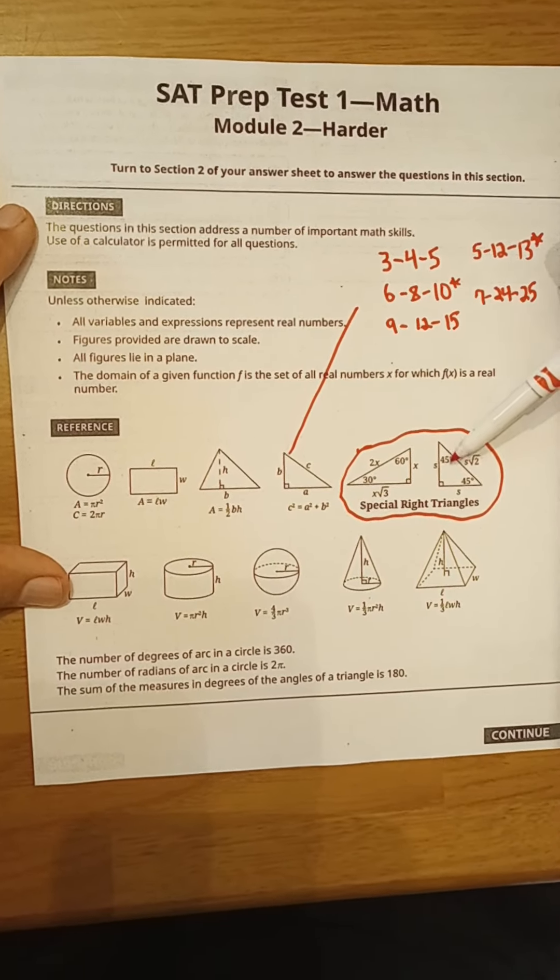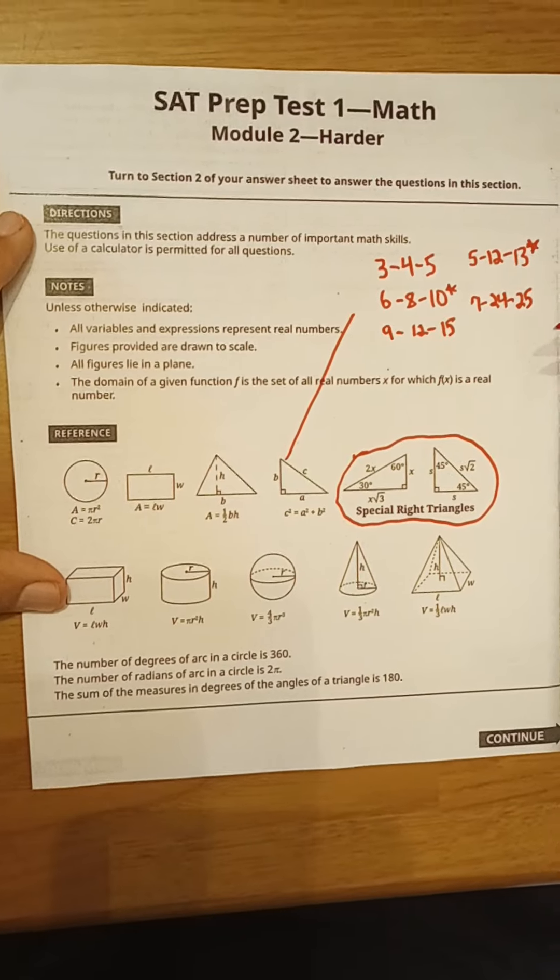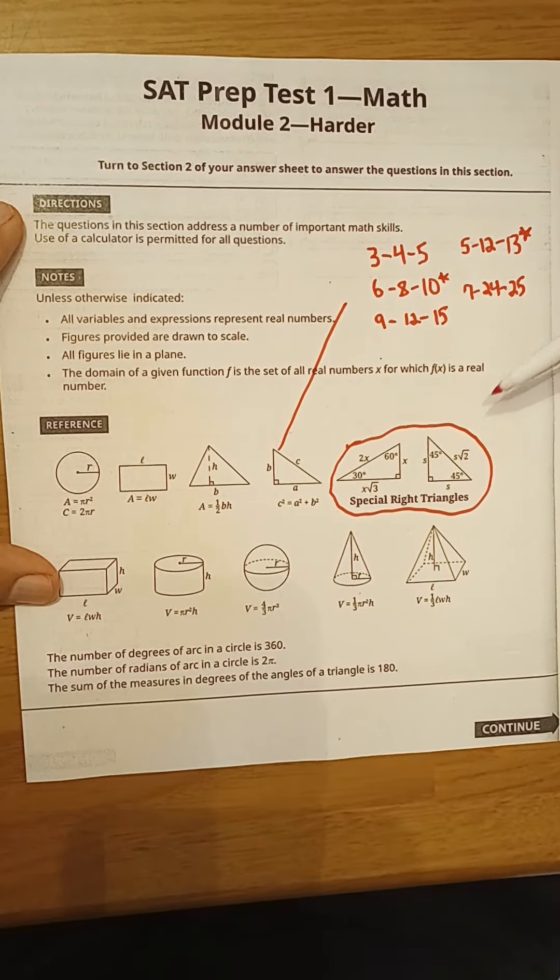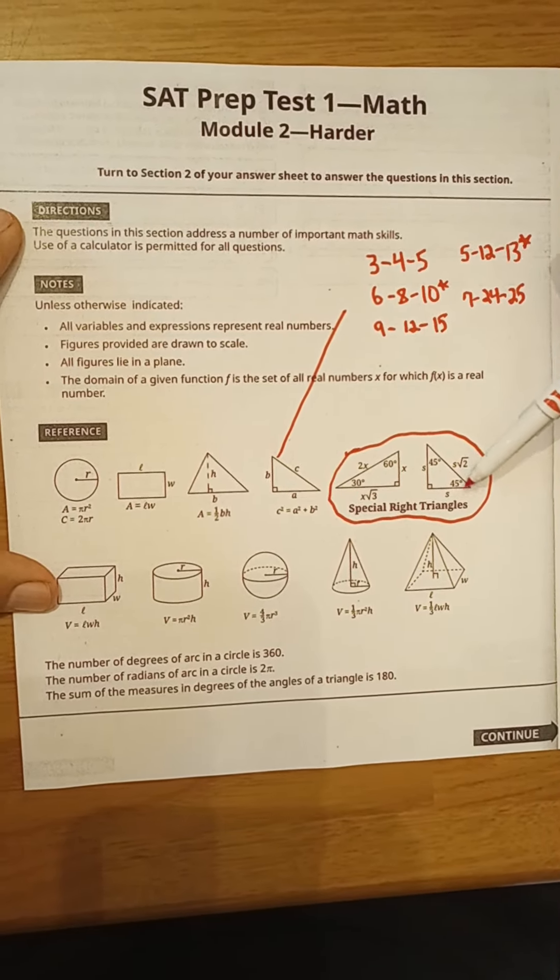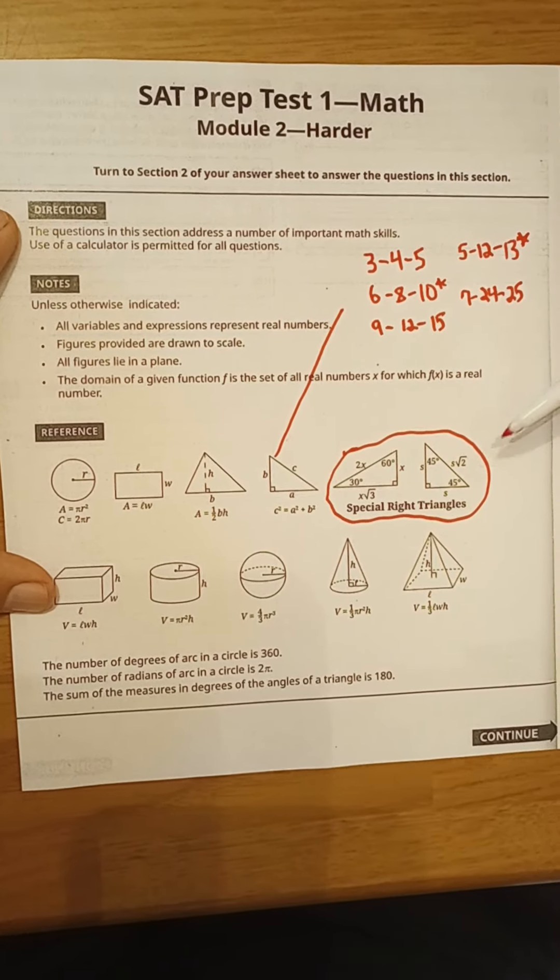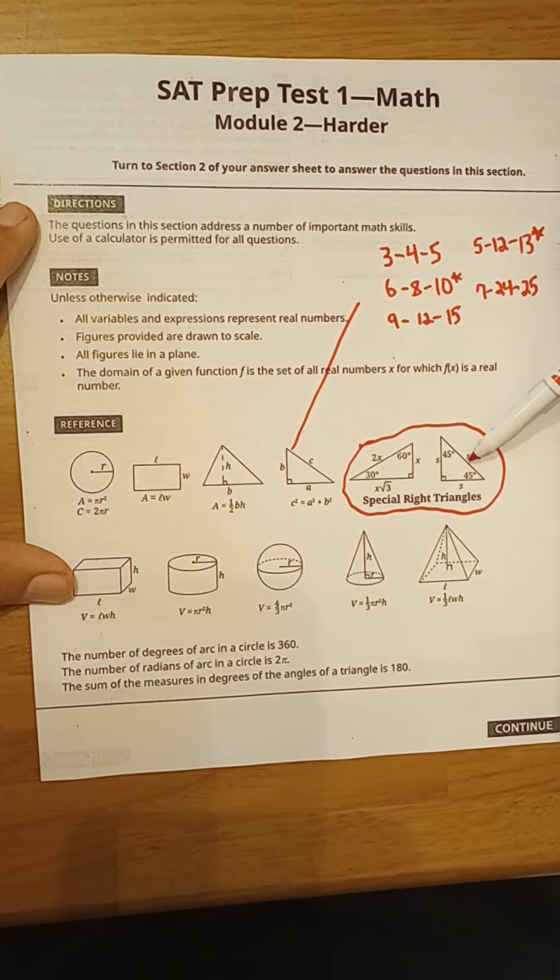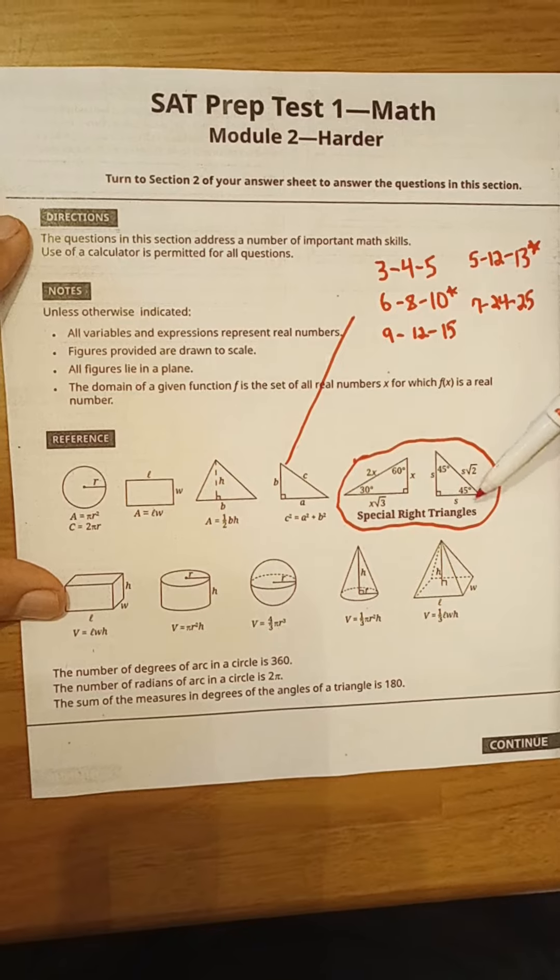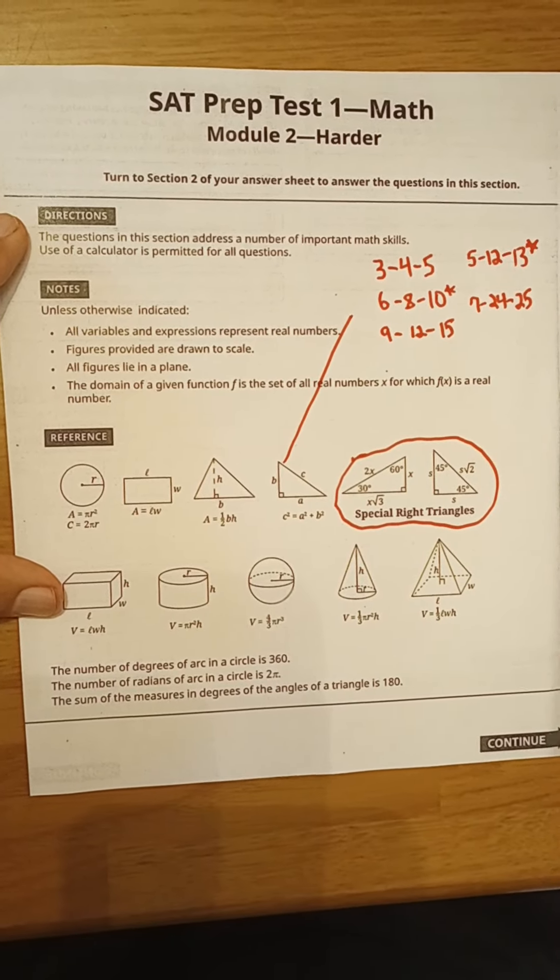Then we have the 45, 45, 90, or isosceles right triangle, where equal sides are opposite equal angles. And then the hypotenuse is side square root 2. So we have side, side, side square root 2.